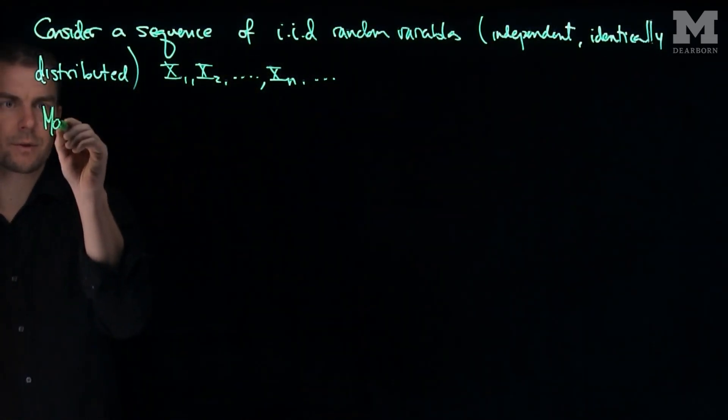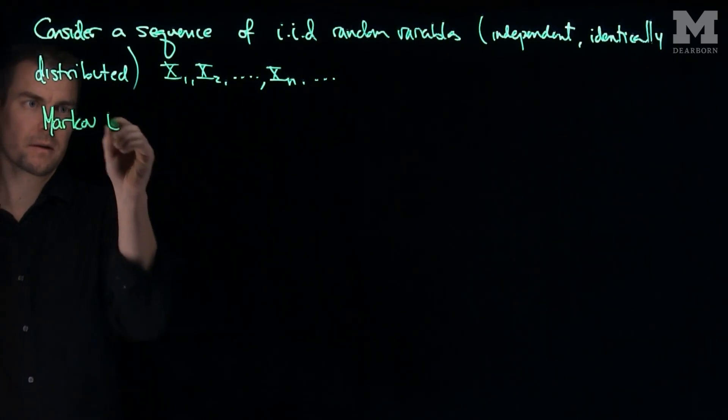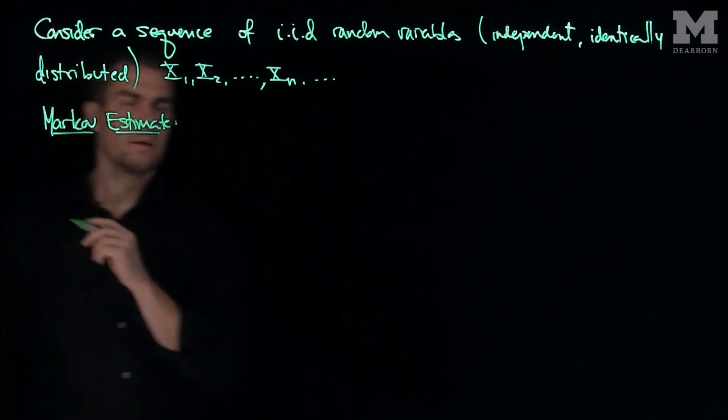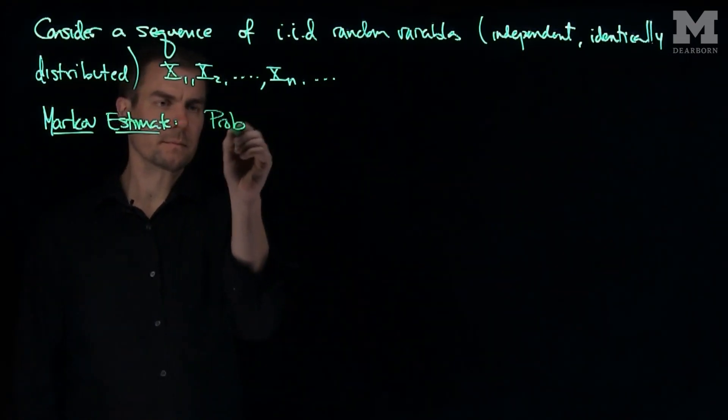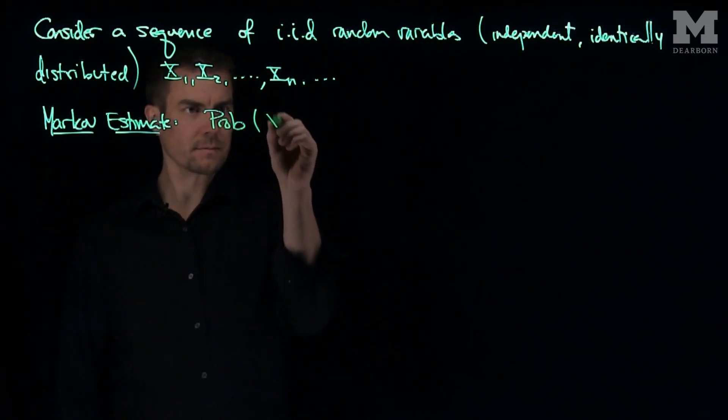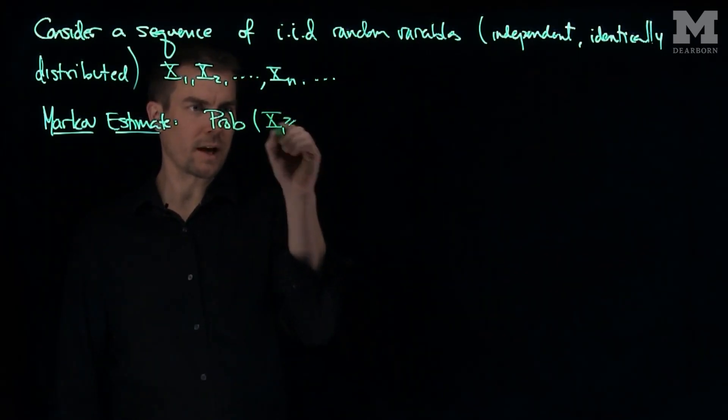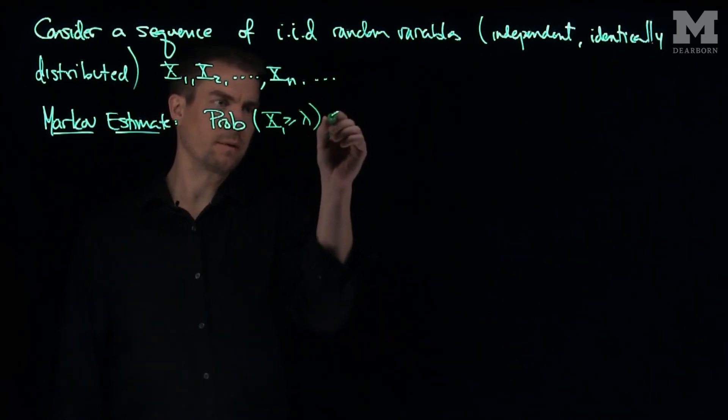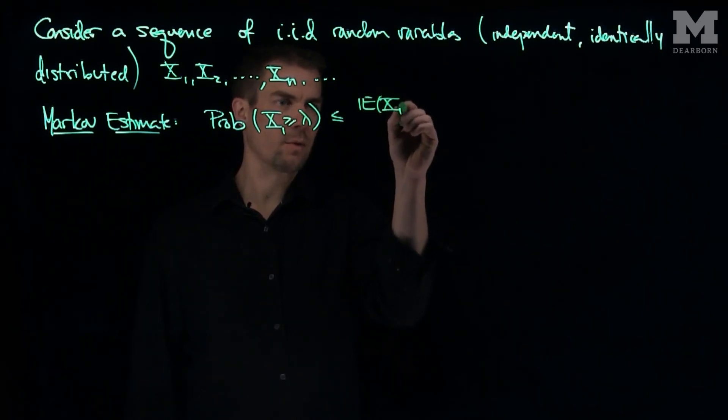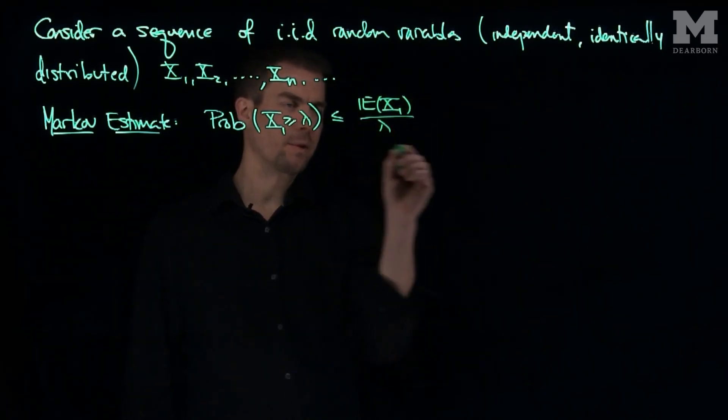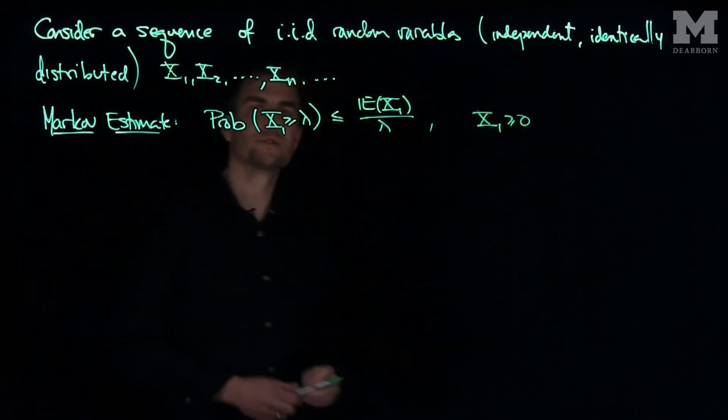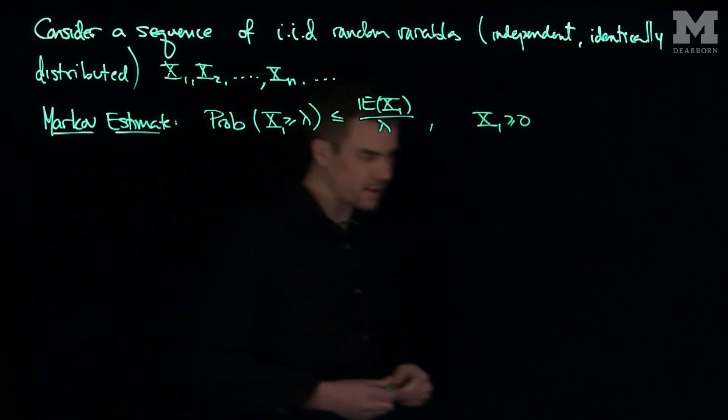The first estimate is known as the Markov estimate. It says the probability that X1 is greater than or equal to lambda is less than or equal to the expected value of X1 over lambda. Let's assume that X1 is not negative, so X1 is greater than or equal to 0. So what does this Markov inequality say? Let's get a sense for why it works.